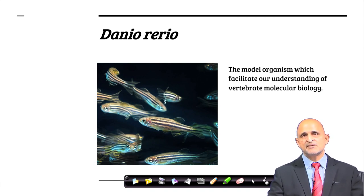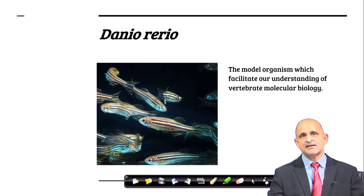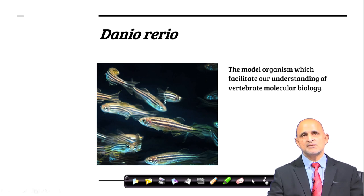The next organism we will be working with is Danio rerio, or zebrafish. Zebrafish is used as a model for studying the role of genes and their functions as proteins. With the Danio rerio model, you will be given insights into functional genomics. We will also be having a lab with Danio rerio in which you will have hands-on experience with this model organism.